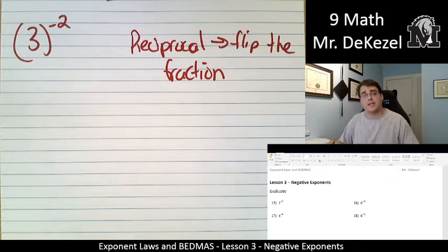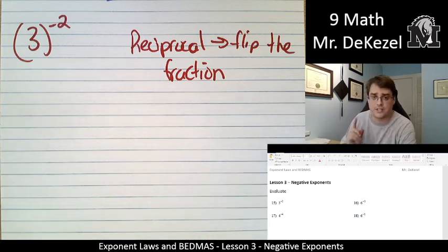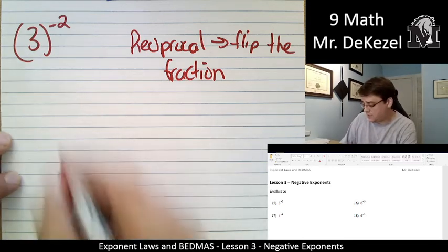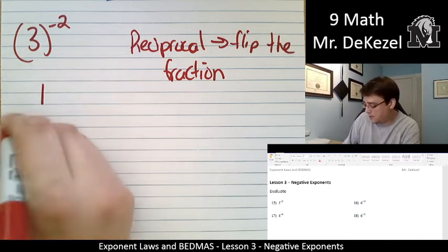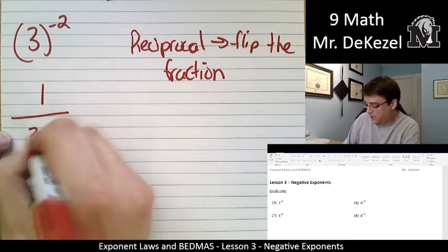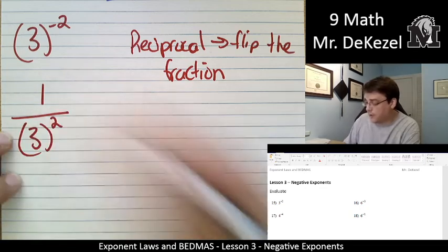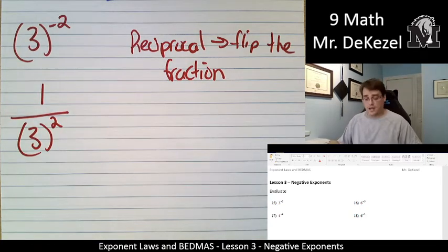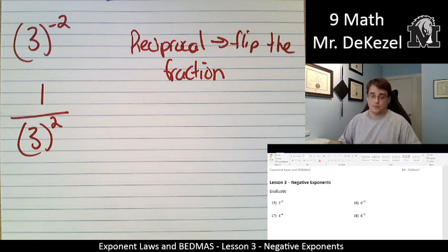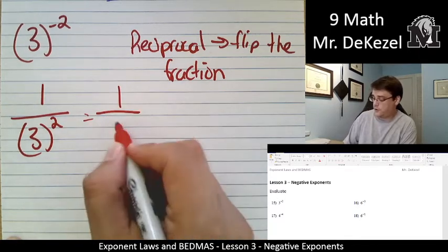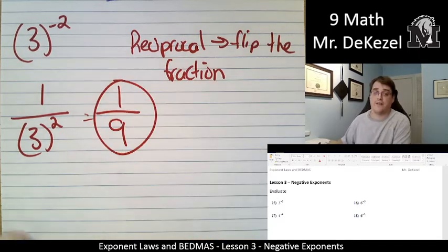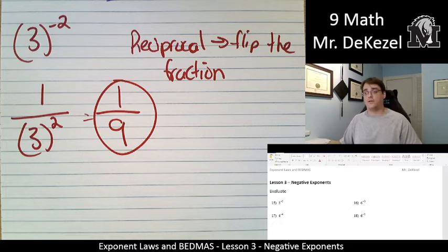We're going to take the reciprocal. It's a very specific way that we do this. We take the entire thing and put it on the bottom. So this is 1 over 3, and then we get to make the exponent positive, 3 to the power of 2. This is something we can work with, because we know what 3 squared is. 3 times 3 is 9, so we can go 1 over 9. There we go, we have our answer. 1 over 9, the fraction is our answer, 1 ninth.